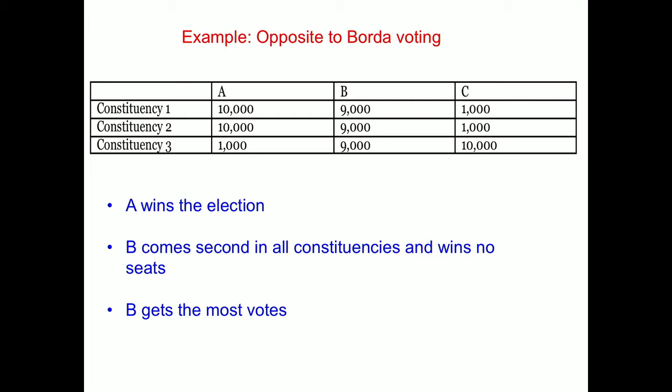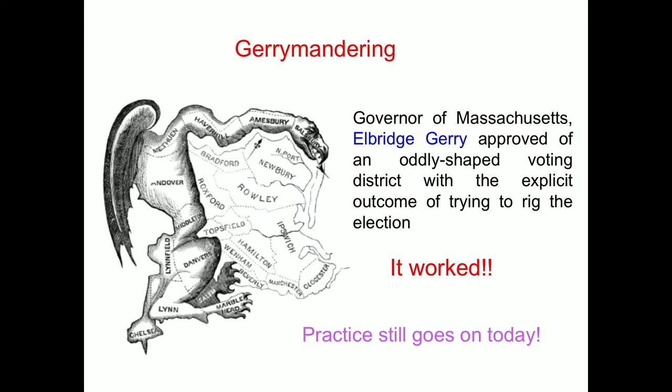Gerrymandering is another issue — manipulating constituency boundaries to guarantee votes. Elbridge Gerry, about 200 years ago, approved a very strangely shaped district in Massachusetts precisely to consolidate the voters he needed and isolate those he didn't, winning the election. Gerrymandering is still practiced, and mathematicians are out there to spot whether it's happening.